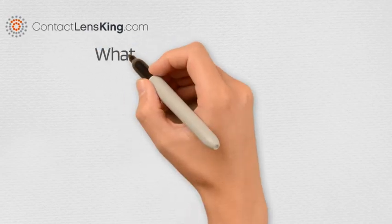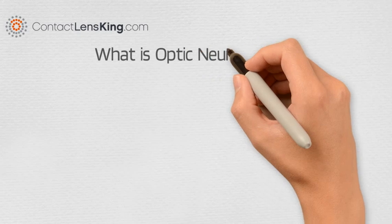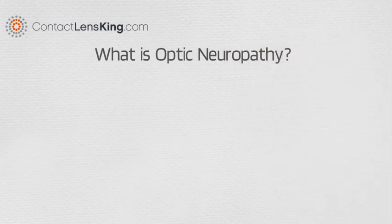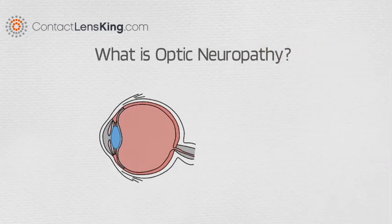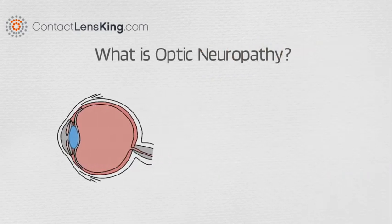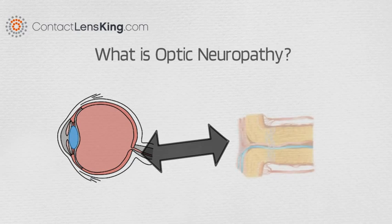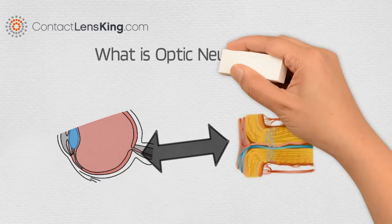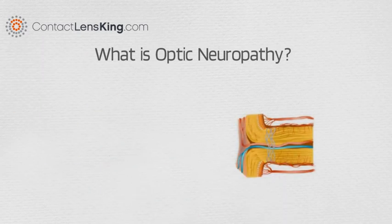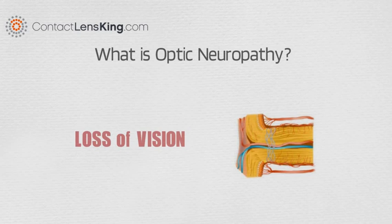ContactLensKing.com presents: What is optic neuropathy? Optic neuropathy describes any damage to the optic nerve, regardless of cause. The main symptom of this condition is loss of vision.